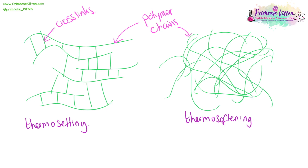Thermosetting and thermosoftening polymers have very, very different properties, and this is based on their structures. Both have long polymer chains, but thermosetting polymers have crosslinks whereas thermosoftening polymers don't. Upon heating, thermosoftening polymers can slide past each other and will melt, whereas thermosetting polymers cannot slide past each other and will burn.